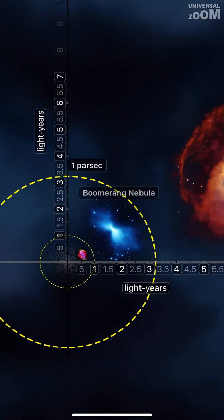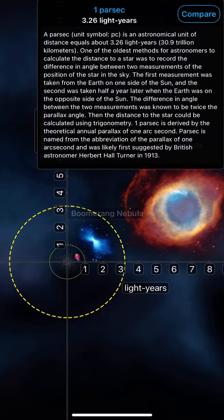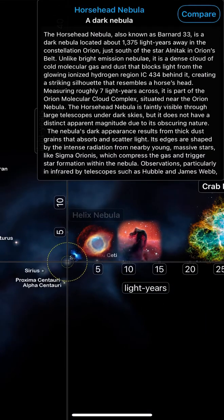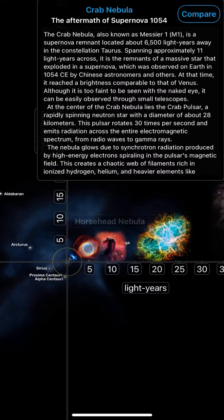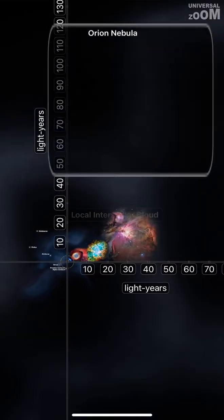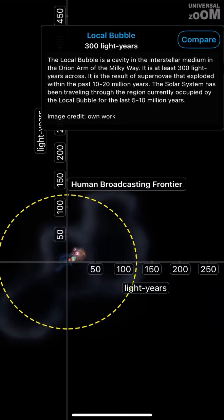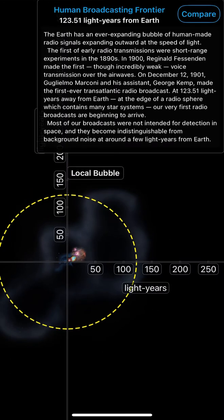Boomerang Nebula. One parsec. Helix Nebula, one of the nearest planetary nebulae. Horsehead Nebula, a dark nebula. Crab Nebula. Orion Nebula, local interstellar cloud. Local bubble, 300 light years, human broadcasting frontier.